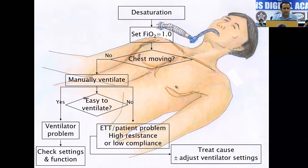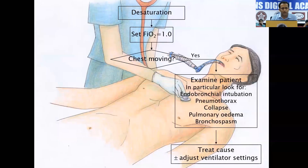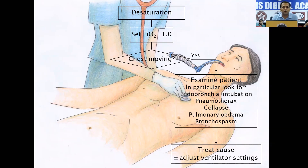If you have to disconnect the patient from ventilation, you should be wearing appropriate PPE and you should stop the ventilator before you start bagging the patient. Only after that, manually ventilate the patient and see whether it is easy to ventilate or not. If it is not easy to ventilate, it could be an endotracheal tube related problem or a patient problem. If you are able to ventilate well with an AMBU bag, then it is a ventilator problem. If the chest is moving well, you have to examine the patient — look for endobronchial intubation, pneumothorax, pulmonary edema, or bronchospasm.